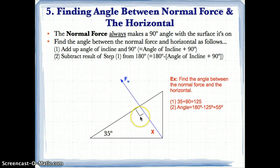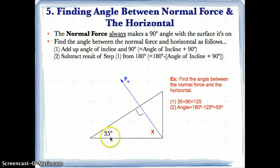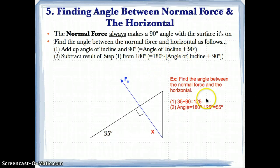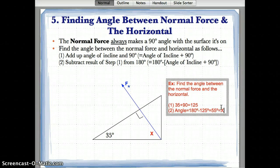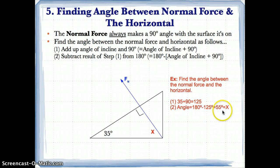To solve for x, do 35 plus 90 to get 125, then subtract 125 from 180 to find x equals 55 degrees. So the method is: take the angle of the incline given, add 90 degrees (because the normal force makes a 90 degree angle with the surface), then subtract the sum from 180 to get the mystery angle. Here, 180 minus 125 gives us 55 degrees for x.